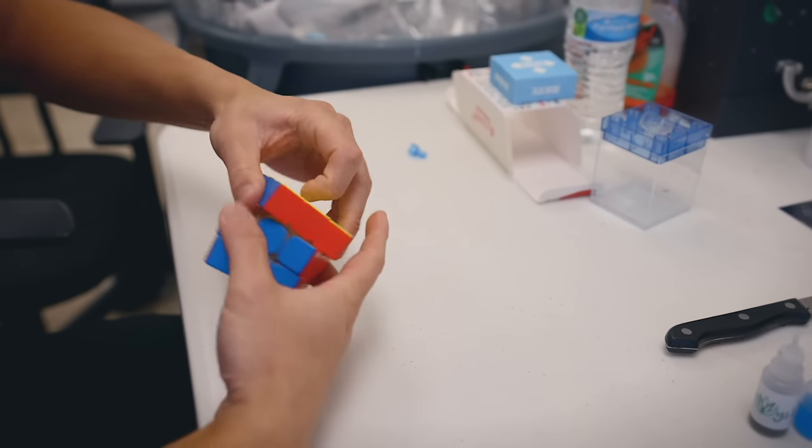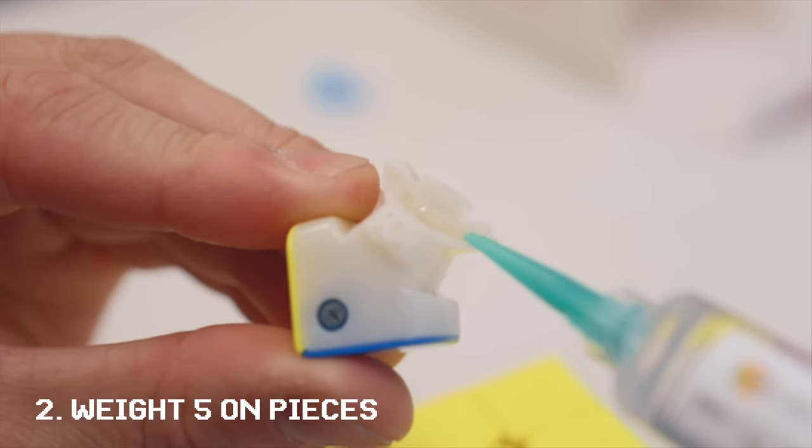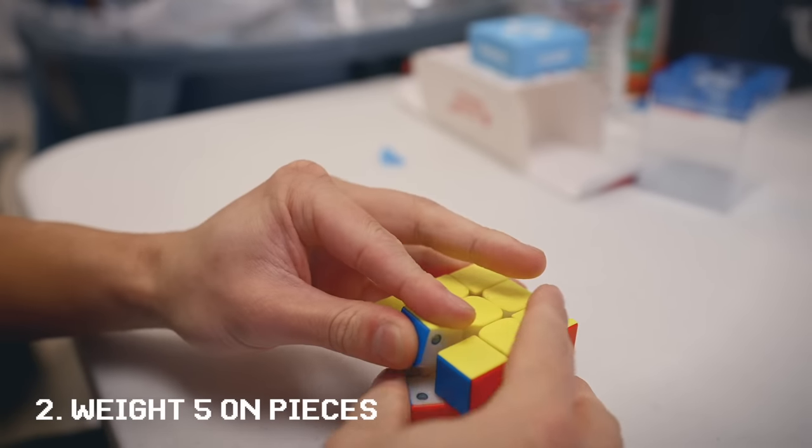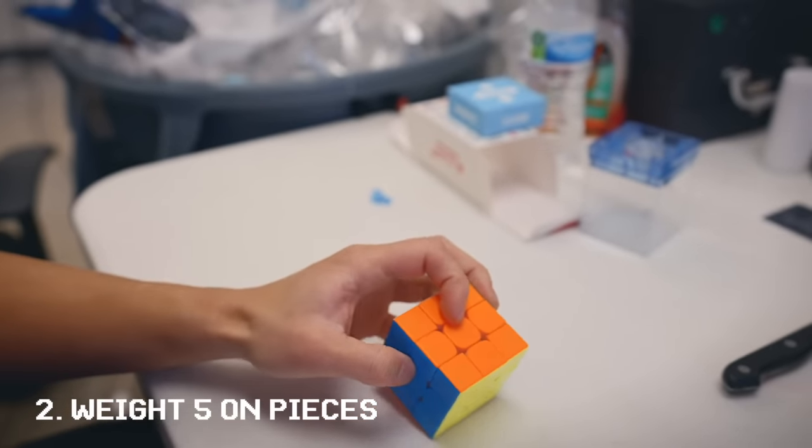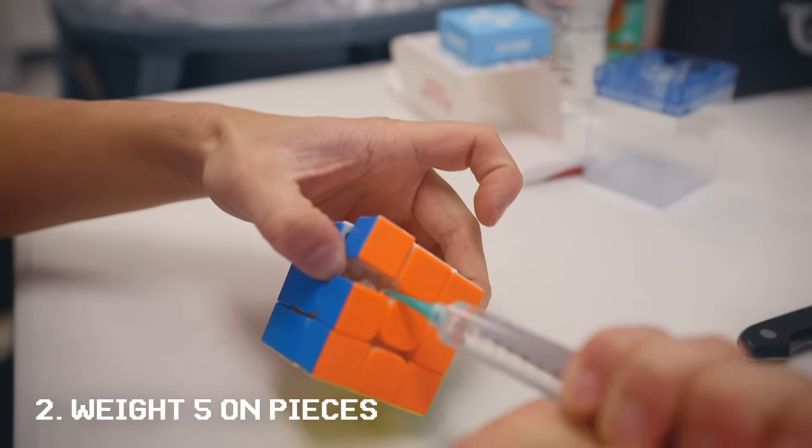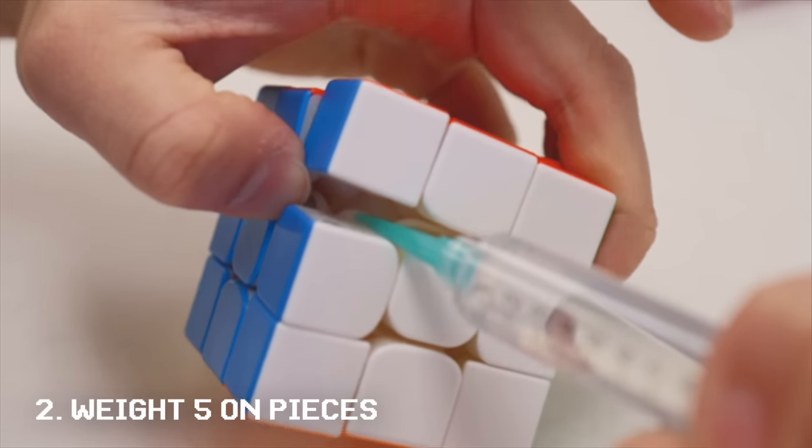So then we're going to coat the pieces in weight five. Some lube right here in the grooves. And then I'm also going to create one dab of lube here. Okay, and then another dab of lube here.